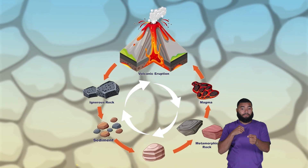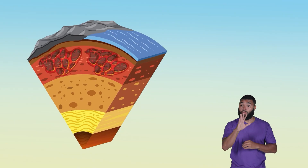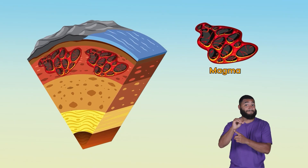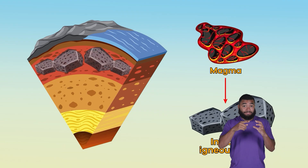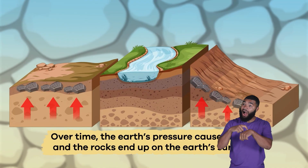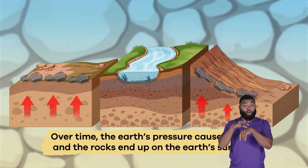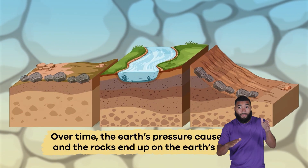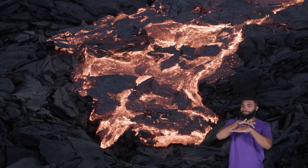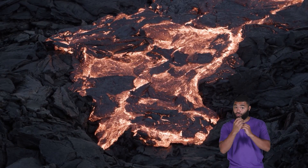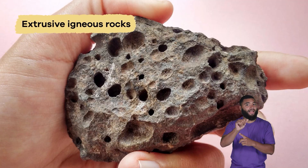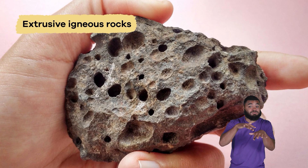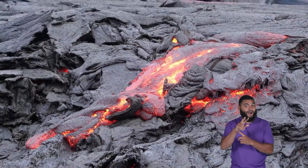Let's dig in to the steps of the rock cycle. Step 1: Magma cools and crystallizes beneath the Earth's crust, forming intrusive igneous rocks. Over time, the Earth's pressure causes uplift and the rocks end up on the Earth's surface. Step 2: Molten magma flows to the surface of the Earth as lava through volcanic activity, causing extrusive igneous rocks to form as the lava hardens and crystallizes.